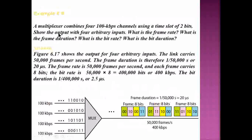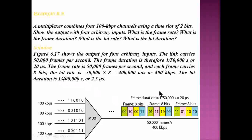Another example: a multiplexer combines 4 channels of 100 kilobits per second using time slots of 2 bits. The link carries 50,000 frames per second. The frame duration is therefore 1/50,000 = 20 microseconds. The frame rate is 50,000 frames per second and each frame is 8 bits, so the bit rate is 50,000 × 8 = 400,000 bits per second, or 400 kilobits per second.